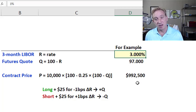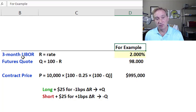If I were dramatic and said that LIBOR dropped to 2%, you can see the futures quote has an inverse relationship—it increases from 97 to 98, and the contract price increases also.